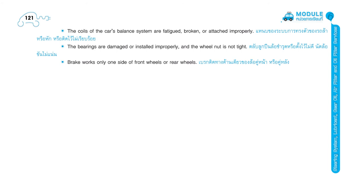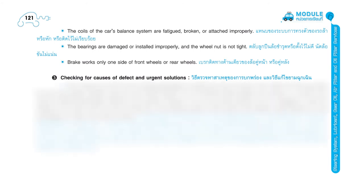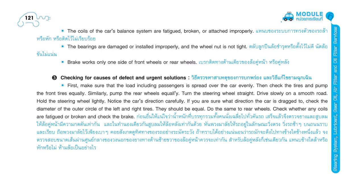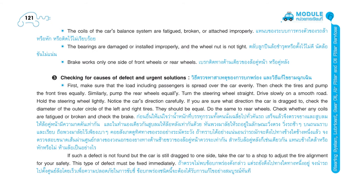Additional causes: brake works on only one side of front or rear wheels. Checking for causes and urgent solutions: first, make sure that the load including passengers is spread over the car evenly. Then check the tires and pump the front and rear tires equally. Turn the steering wheel straight. Drive slowly on a smooth road and hold the steering wheel lightly. Notice the car's direction carefully. If you are sure which direction the car is dragged to, check the diameter of the outer circle of the left and right tires — they should be equal. Do the same to the rear wheels, and check whether any coils are fatigued or broken, and check the brake. If such a defect is not found but the car is still dragged to one side, take the car to a shop to adjust the tire alignment for your safety.